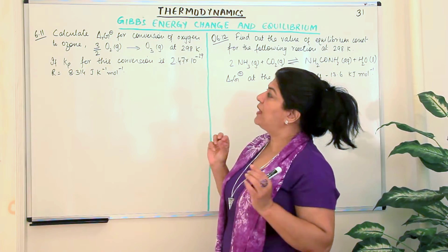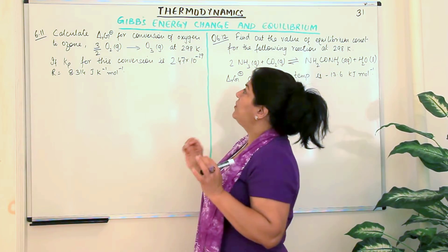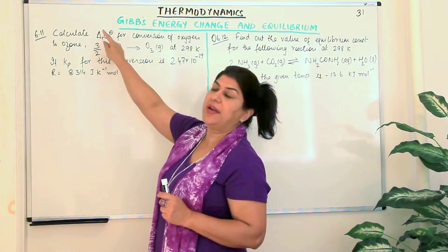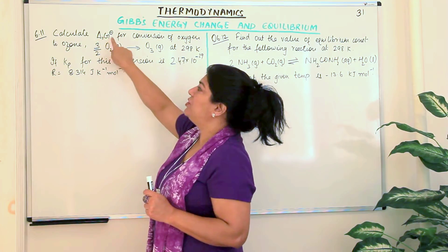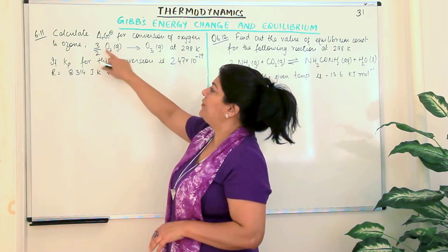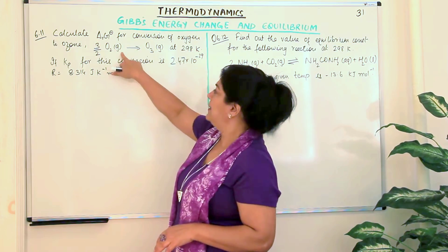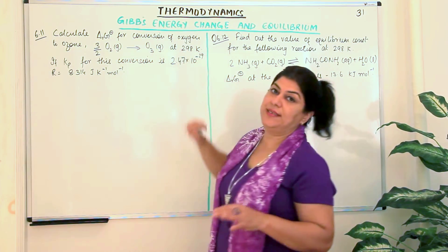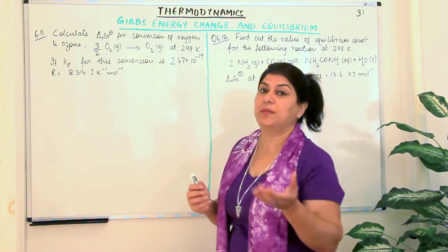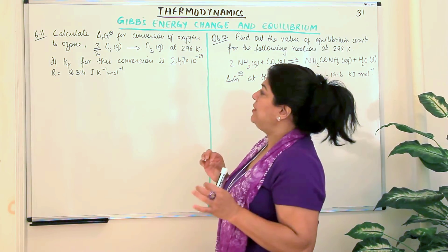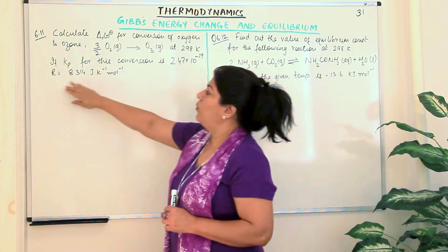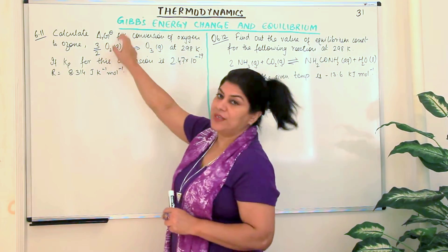In this question, you have to calculate delta G — that is the standard Gibbs free energy change — for the conversion of oxygen to ozone. The equation given is: 3/2 O₂ (g) → O₃ (g) at 298 Kelvin, which are standard conditions. If Kp for this conversion is 2.47 × 10⁻²⁹ and R is given, you have to find out the value of delta RG°.